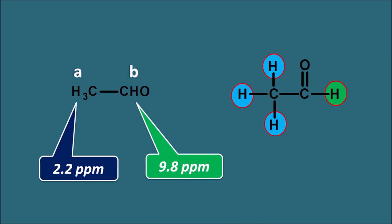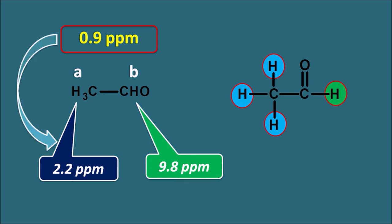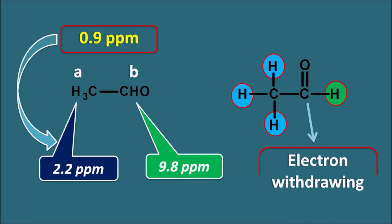In propane, methyl protons appeared at 0.9 ppm, but in acetaldehyde they shift to 2.2 ppm. The chemical shift has increased because the methyl group is attached to an aldehyde containing a carbonyl functional group. This carbonyl group acts as an electron-withdrawing group, deshielding the methyl protons and increasing their chemical shift.